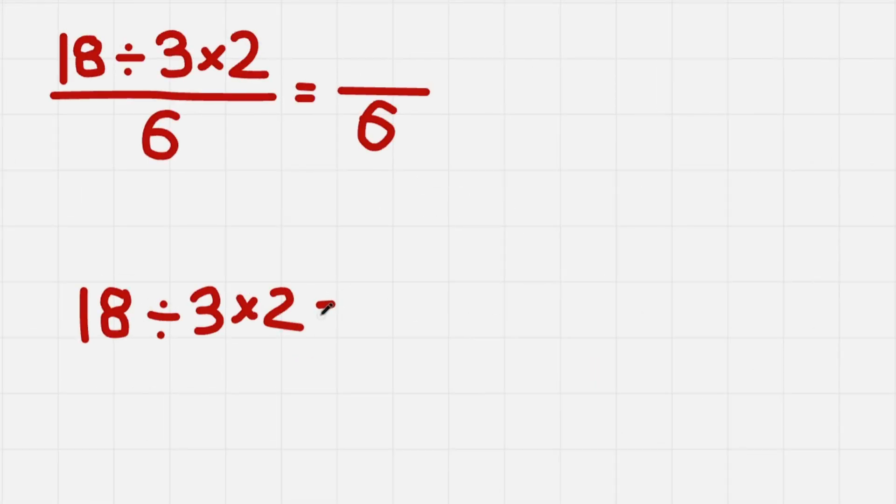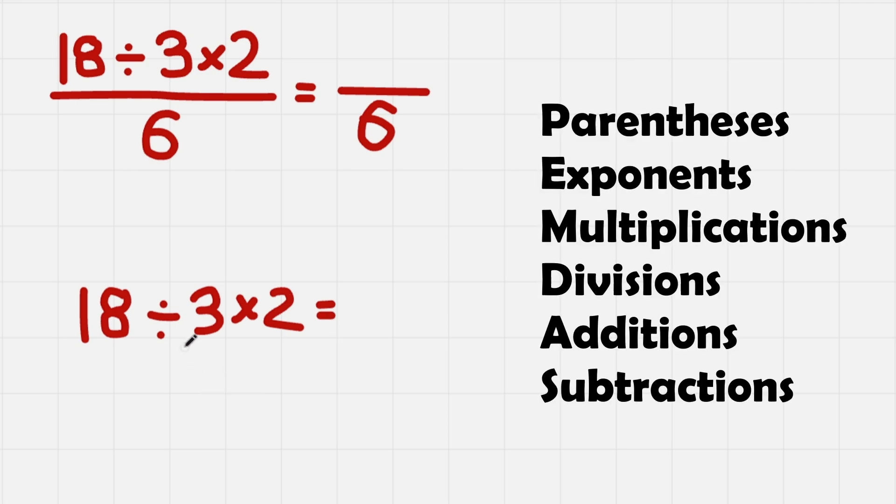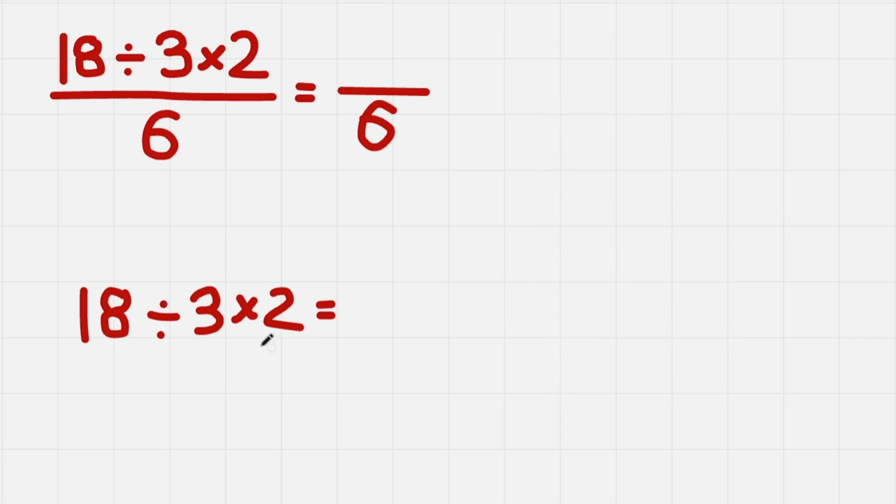So if someone doesn't know how to use PEMDAS correctly, they would probably assume that you should do 3 times 2 first, just because we have M and D in PEMDAS and multiplication goes first. But no, they have the same priority.